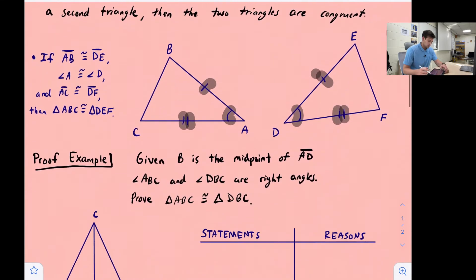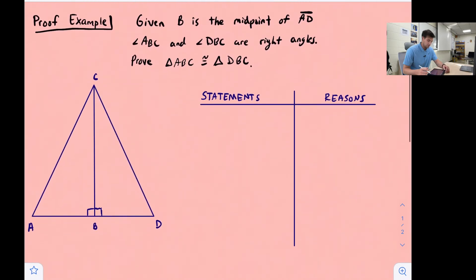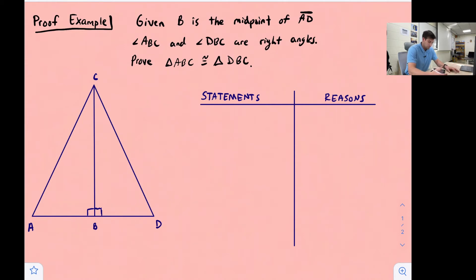Now let's look at an example where we actually prove that this congruence theorem works. We are given triangle ACD with a segment CB splitting the base of our triangle into two parts, giving us triangle ABC and triangle DBC. We're told that point B is the midpoint of segment AD, and that angle ABC and angle DBC are right angles. We want to prove that triangle ABC is congruent to triangle DBC. In a two-column proof, we start with what is given.